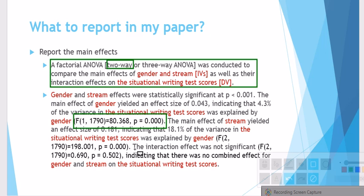Now you also had an interaction. The interaction effect was not significant—that's in the present study. If it were significant in your study, you would have to report it as it was significant, and then the notation for F. Now I would recommend that you continue by saying what this significant or lack of significant finding indicates. So it indicates, in this study, that there was no combined effect for gender and stream on the situational writing test scores.